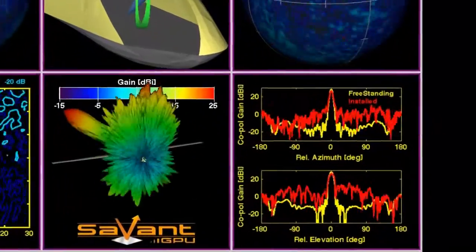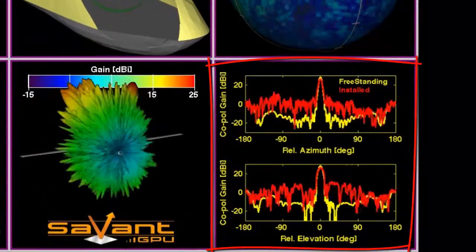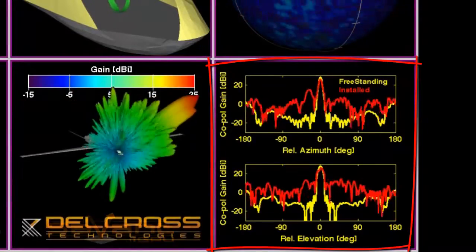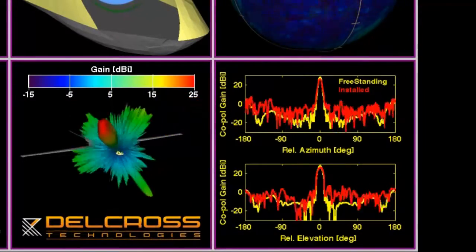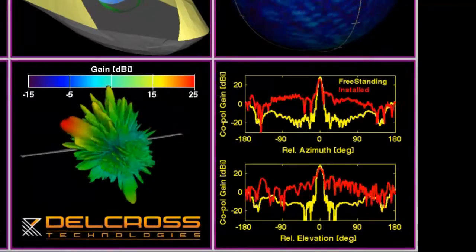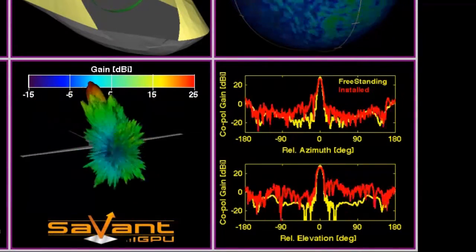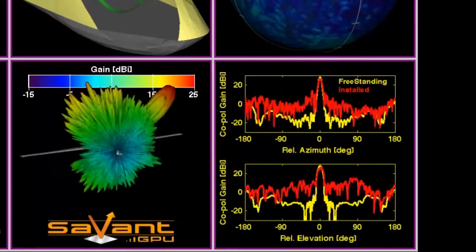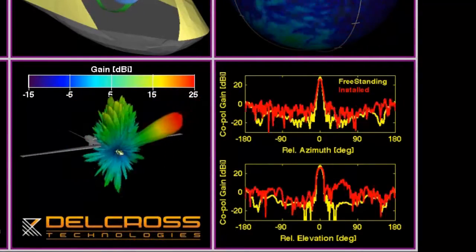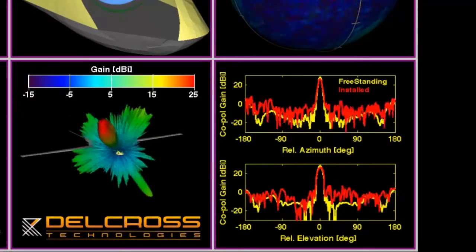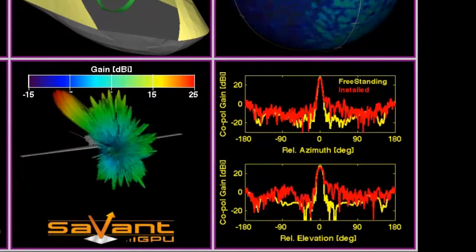Finally, the plot in the lower right shows a comparison of free space performance of the antenna to its installed performance. Pattern cuts are shown for both azimuth and elevation performance, re-centered to the intended main beam direction. These plots illustrate clearly the installed performance effects on the principal main beam pattern cuts, which amount to the difference between the red installed performance curves and the yellow free space curves.